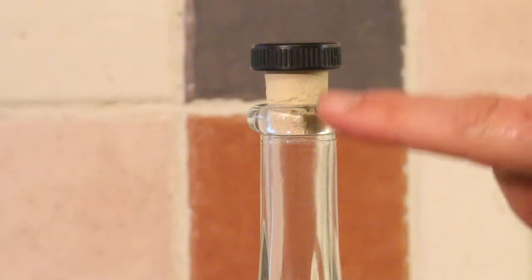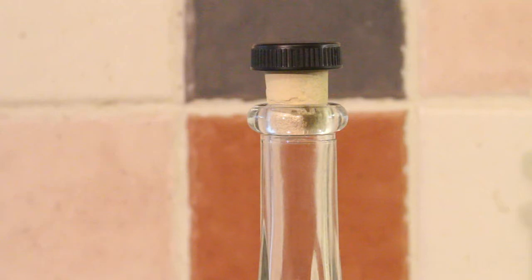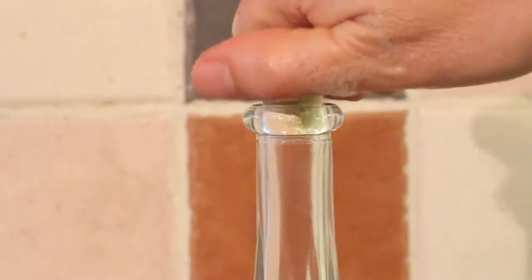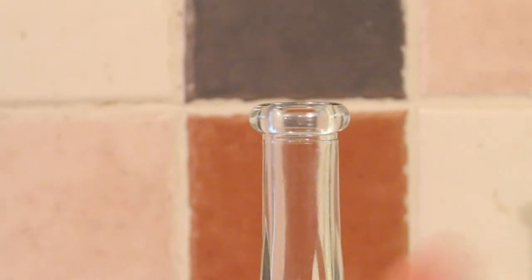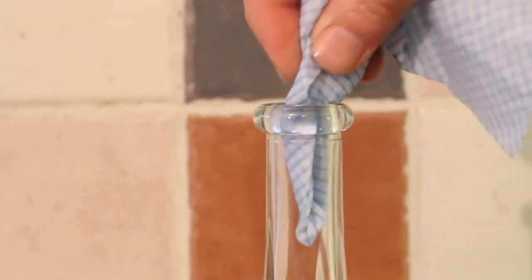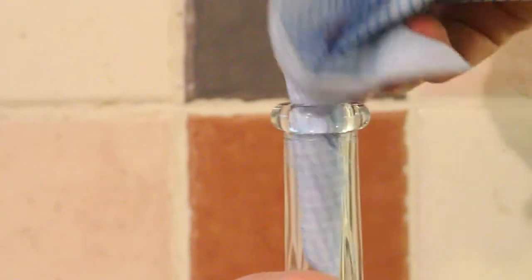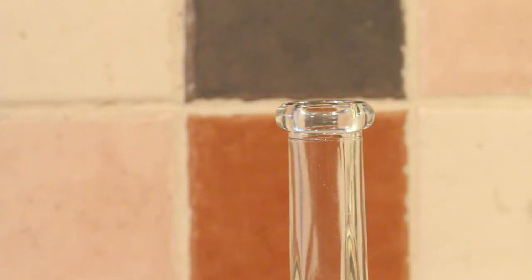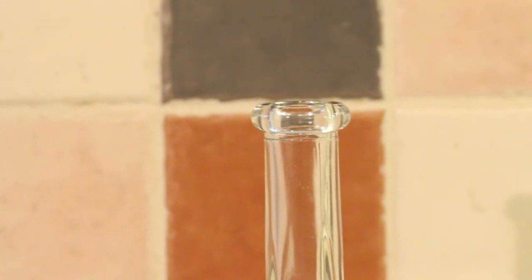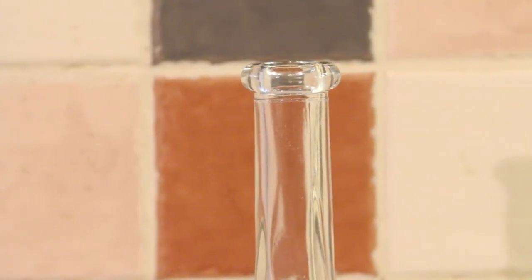So all we need to do now is take out the cork, get a nice clean damp dishcloth, stick it in there, give it a little wipe, and that, my friends, is a lovely clean bottle top. Thanks for watching.